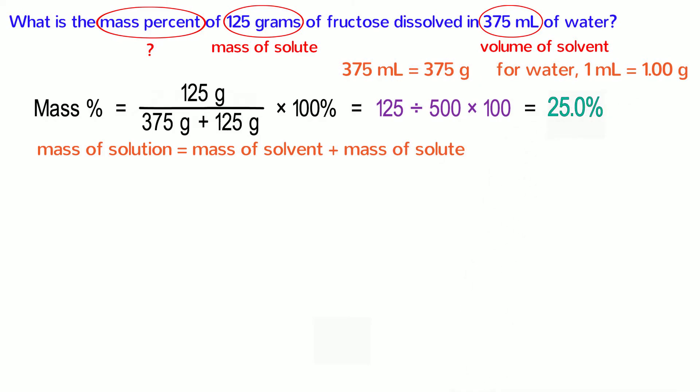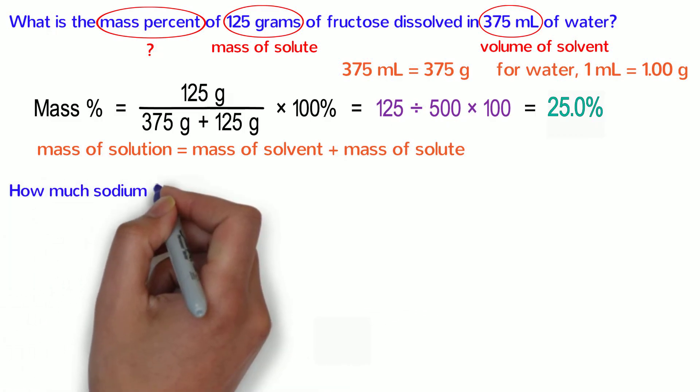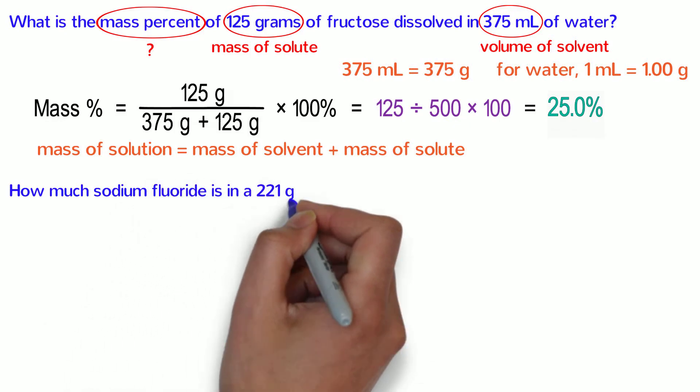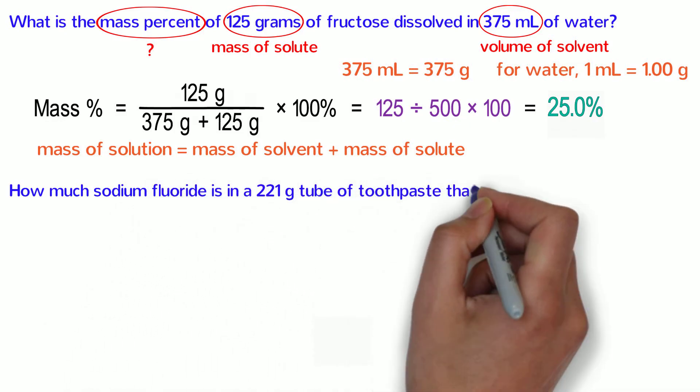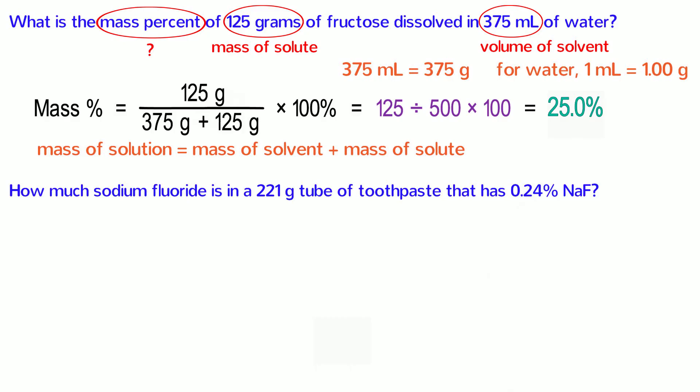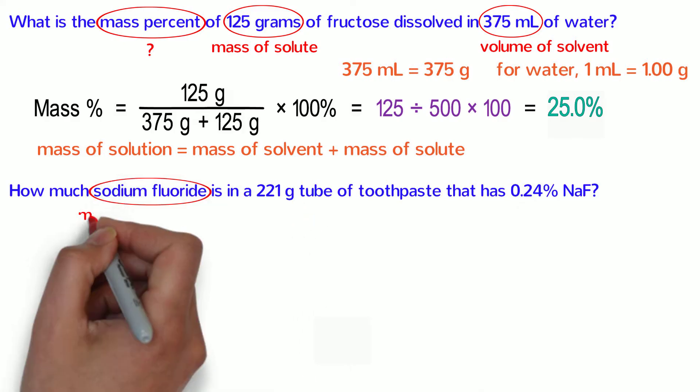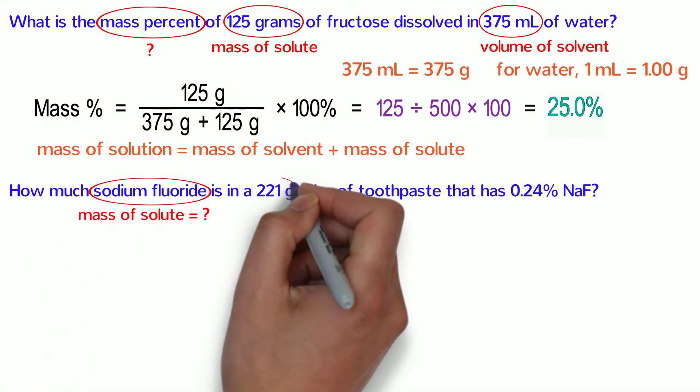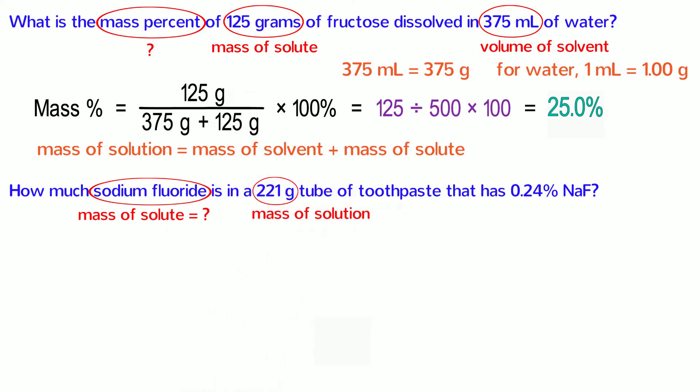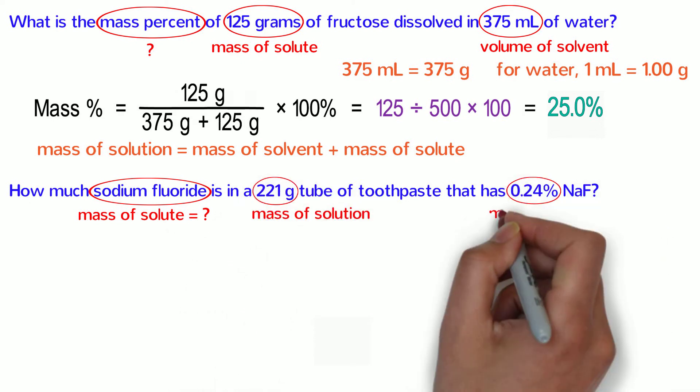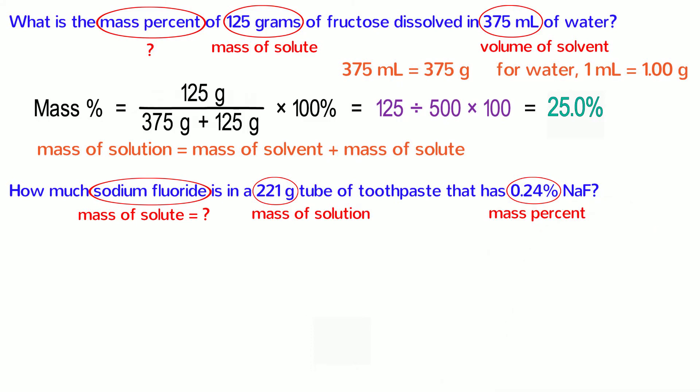Suppose, however, we wanted to solve for something different, such as the mass of the solute. Let's try this next problem. How much sodium fluoride is in a 221 gram tube of toothpaste that has 0.24% sodium fluoride? In this case, we are solving for the mass of the solute. 221 grams is the mass of the solution and 0.24% is the mass percent concentration of sodium fluoride.